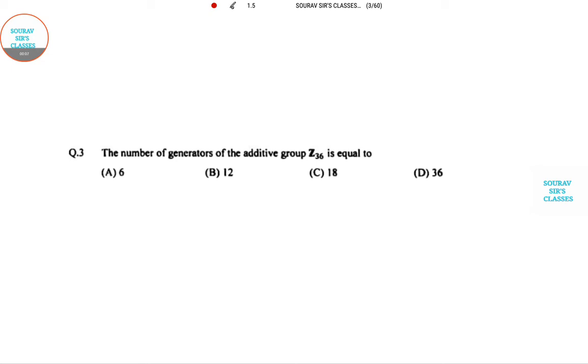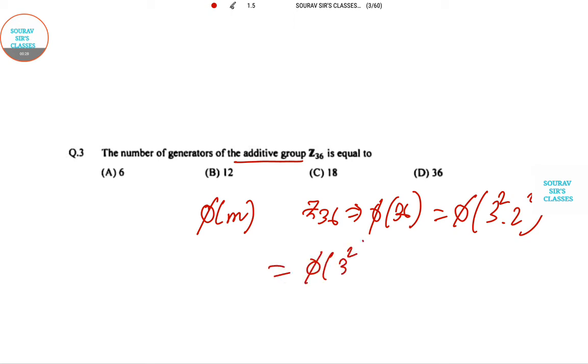Let's solve: the number of generators of the additive group Z36 is equal to what? We know that the number of generators of an additive group is phi of n. So number of generators in Z36 is phi of 36, which can be written as the product of these two primes.